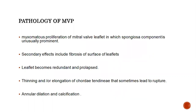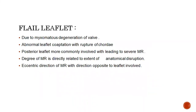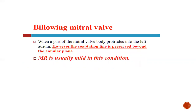Flail leaflet is generally due to myxomatous degeneration of the valve, and may be associated with abnormal coaptation secondary to rupture of chordae. The posterior leaflet is more commonly involved in flail leaflet, which leads to severe MR. The degree of MR is generally directly related to the extent of anatomical disruption. The eccentric jet of MR is generally seen in the opposite direction of the leaflet involved. Billowing mitral leaflet is defined by the mitral valve body protruding into the left atrium below the hinge point; MR is usually mild in this condition.